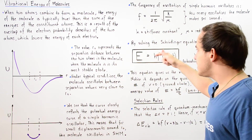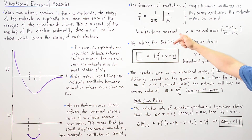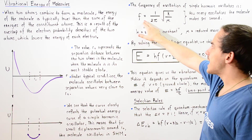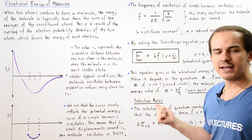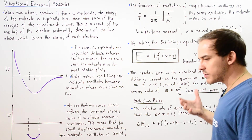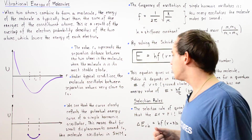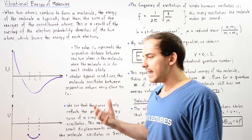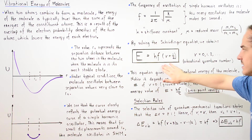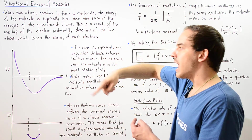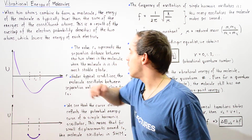The vibrational energy E equals h multiplied by f multiplied by (V plus one half), where h is Planck's constant, f is the frequency obtained from the oscillator equation, and V is the vibrational quantum number — a value that begins at zero and increases by increments of one. So V can be 0, 1, 2, 3, 4, and so on. This equation gives us the vibrational energy of our molecule as a result of its oscillation around R-naught, and the energy depends on both the frequency and the vibrational quantum number.